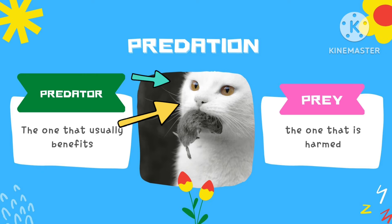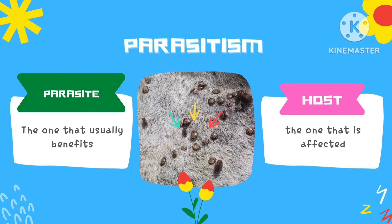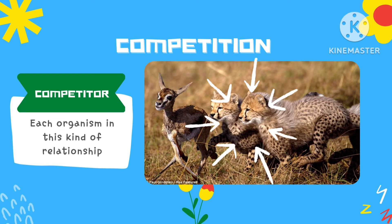In predation, we have the predator — the one that usually benefits — and the prey — the one that is harmed. In parasitism, we have the parasite — the one that usually benefits — and the host — the one that is affected. In competition, each organism in this kind of relationship is called a competitor.